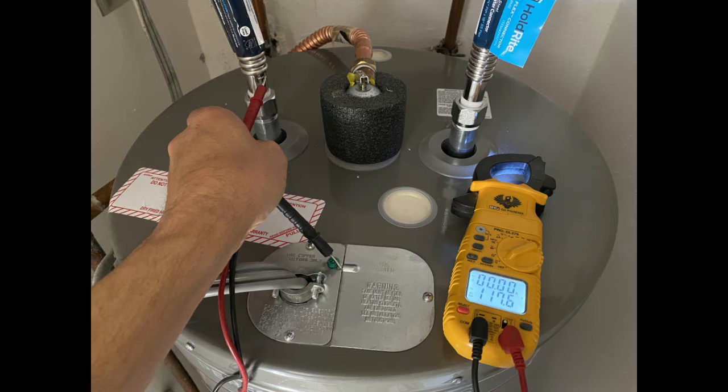So first thing you do, take out your multimeter, set it to AC volt, and measure between the ground and that pipe that I just touched. Potential difference should be next to zero. In this case you'll see it's 117 volts.